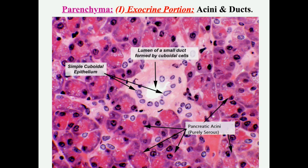The parenchyma is formed of an exocrine part consisting of acini and ducts, as well as an endocrine part which secretes insulin and glucagon. In the exocrine part, you can see the pancreatic acini, rosette-shaped, and here we have a duct. The lumen of the duct is lined by cuboidal epithelium with central rounded nuclei. The pancreatic acini are serous acini with apical acidophilic zymogen granules and basal basophilic cytoplasm.